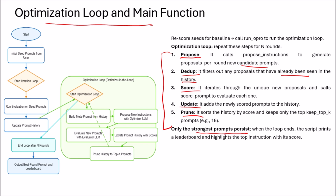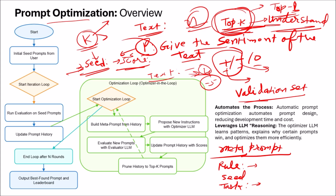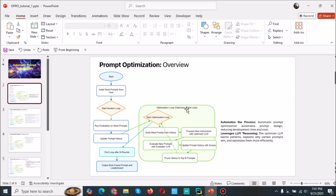Now let's address the cold start problem — when you don't have any seed prompts. There are fixes available: the system can ask you to write your actual prompt as you would normally, like 'Give the sentiment of the text.' Then the system asks you to provide four or five more ways you might write this prompt, along with what you want. You write all that information manually, and those four or five inputs are treated as seeds. The entire optimization loop then improves and optimizes from there.